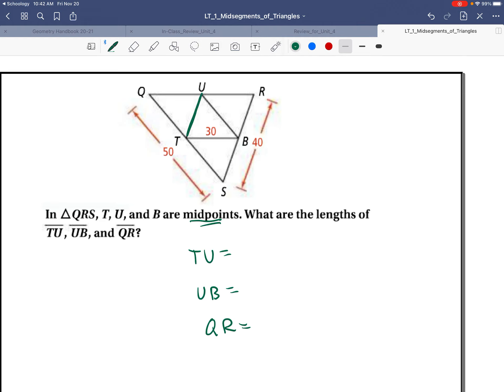TU is a mid-segment, so it will be half the length of 40. So TU is 20. Here we have UB. It's also a mid-segment to this side, which is 50. So UB will be 25.